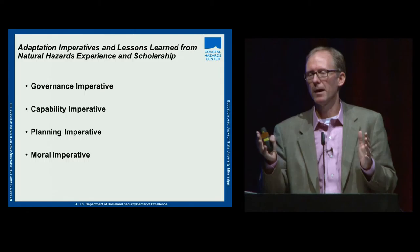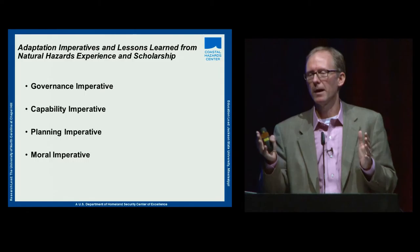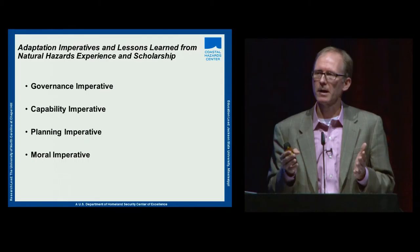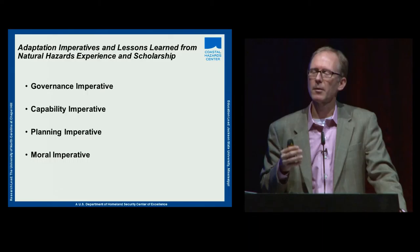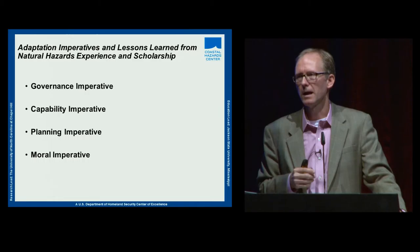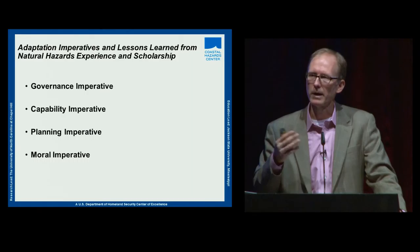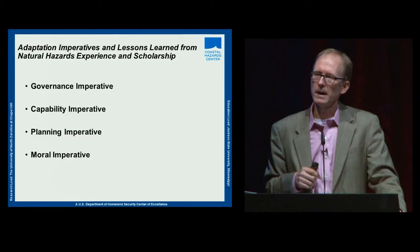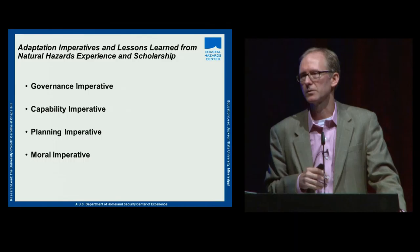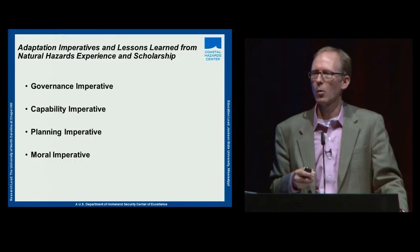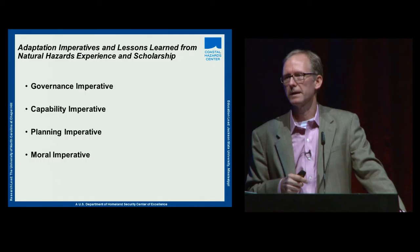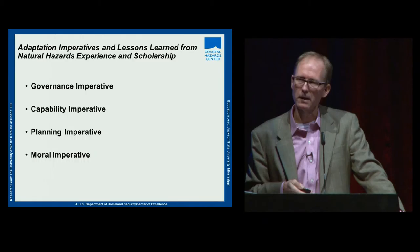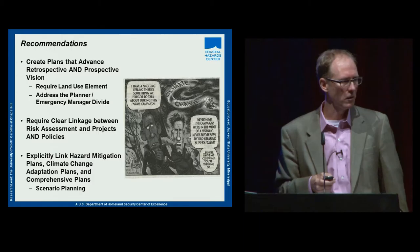The case studies led to 264 recommendations distilled into four imperatives. First, a governance imperative — thinking broadly about governance. Second, a capability and capacity imperative — building local capacity to address a changing climate, including use of indigenous knowledge. Third, a planning imperative — developing meaningful, robust pre-disaster hazard mitigation plans and climate change adaptation plans. Fourth, a moral imperative — as professionals, planners and floodplain managers must recognize that if we don't act today, future generations will inherit the problems we leave behind.